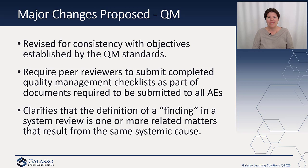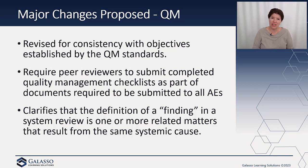They are also making a clarification that is listed as a QM finding. It clarifies that the definition of a finding in a system review is one or more related matters that result in the same systemic cause. Root cause analysis is really important in the new quality management standards, so that's going to be a key change.